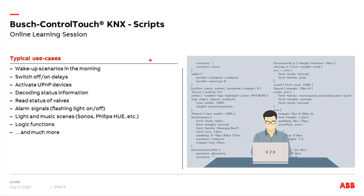Before we start with the code itself, what are typical use cases for scripts? First, we can optimize KNX scenarios like wake-up scenes in the morning, or create switch-off and switch-on delays. We can create functions for actuators and KNX devices not covered by the application itself. We also have the possibility to control UPnP audio devices. Decoding status information is another interesting use case. And of course many other things like alarm signals, light and music scenes, logic functions, and much more.